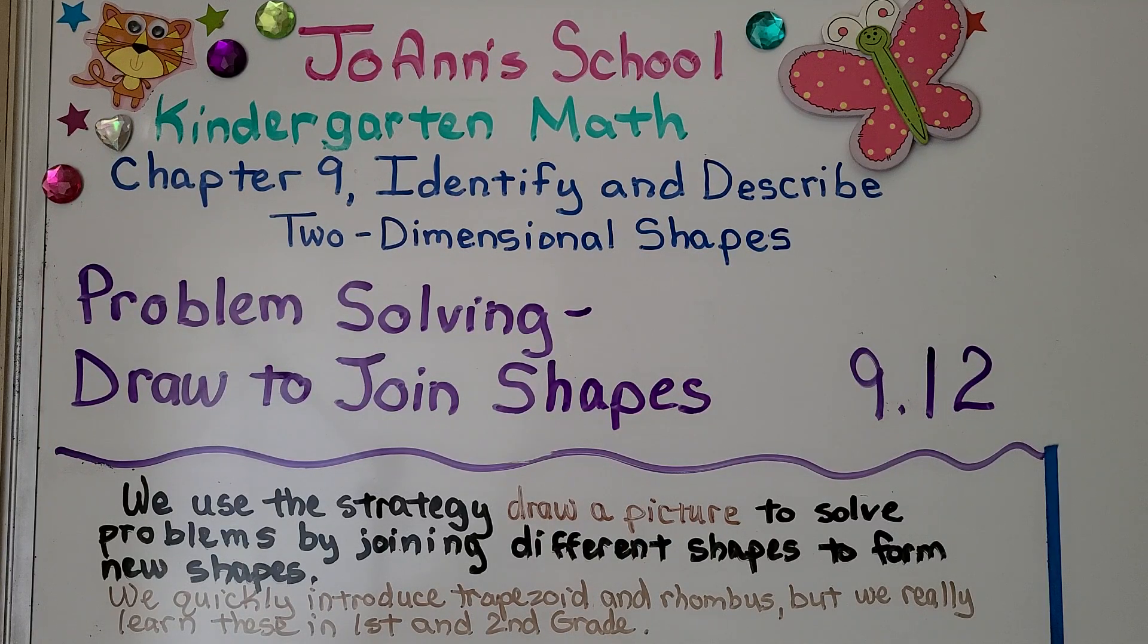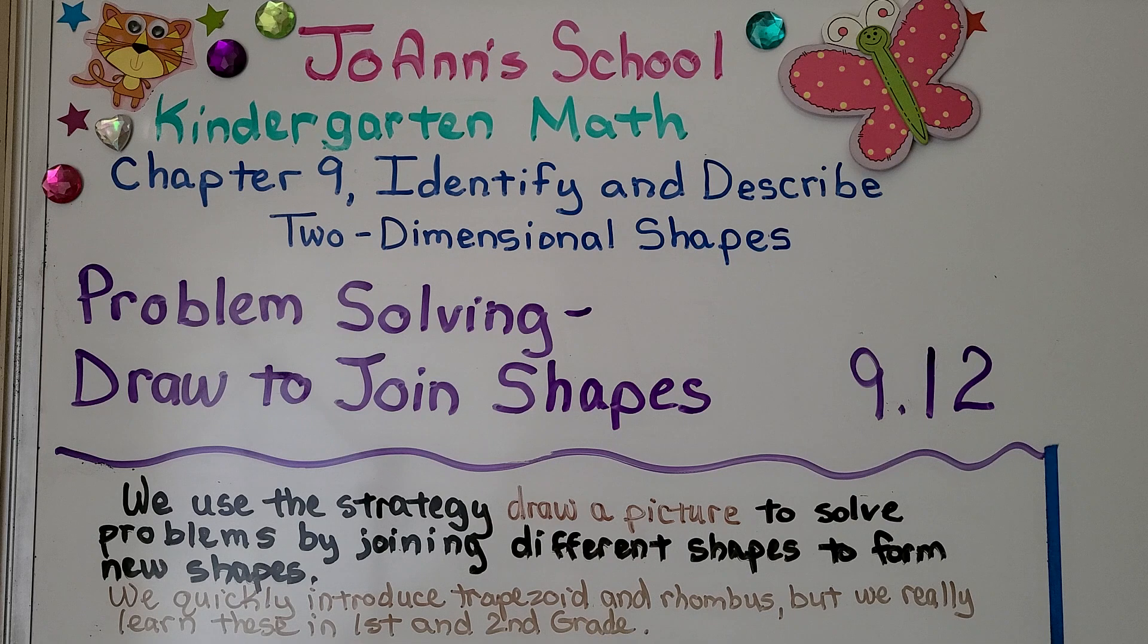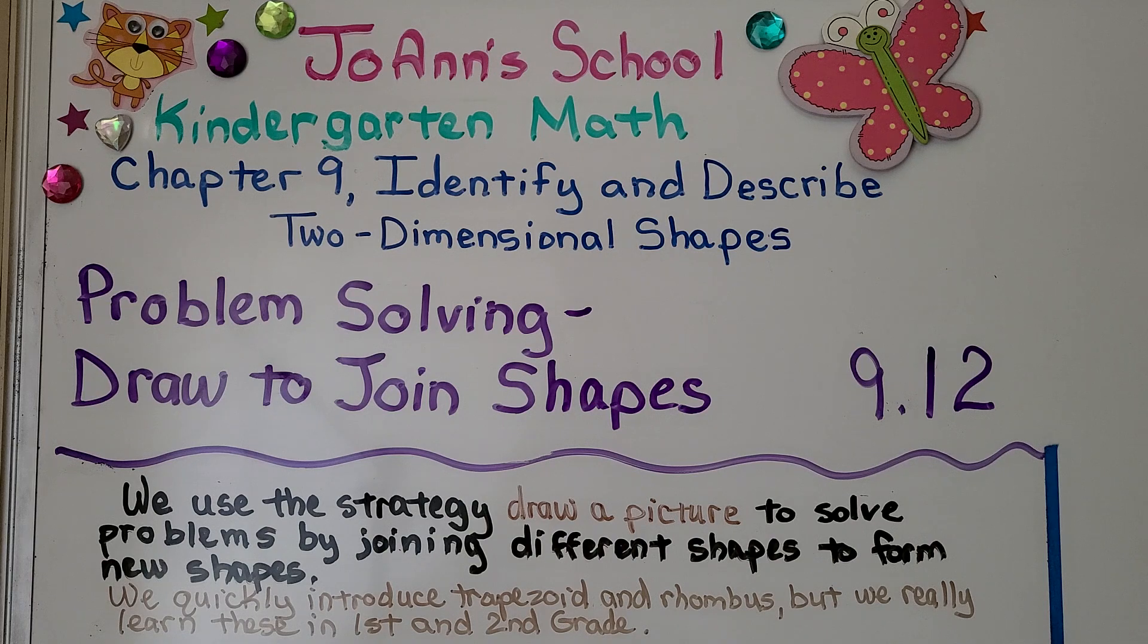Lesson 9.12, Problem Solving, Draw to Join Shapes. We use the strategy Draw a Picture to solve problems by joining different shapes to form new shapes. We're going to quickly introduce trapezoid and rhombus, but we really learned these in first and second grade.